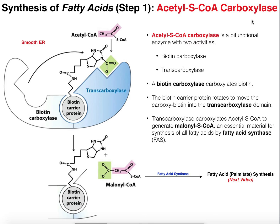What does this enzyme do? Acetyl-CoA carboxylase is going to carboxylate acetyl-CoA — it's going to add an extra carbon as a carboxyl group — and it's going to give us a molecule called malonyl-CoA, which is essentially just acetyl-CoA with an extra carboxyl group on the end. Fatty acid synthesis really doesn't use a lot of acetyl-CoA directly; it converts that acetyl-CoA into malonyl-CoA.